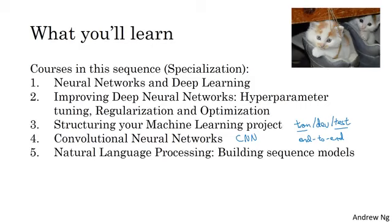Finally, in course five, you learn sequence models and how to apply them to natural language processing and other problems. So sequence models includes models like recurrent neural networks, abbreviated RNNs, and LSTM models, stands for long short term memory models. You learn what these terms mean in course five and be able to apply them to natural language processing problems. So you learn these models in course five and be able to apply them to sequence data. So for example, natural language is just a sequence of words. And you also understand how these models can be applied to speech recognition or to music generation and other problems.